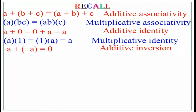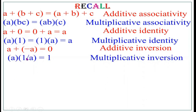What about multiplicative inverse? If you multiply two numbers and the result equals 1 (since 1 is the multiplicative identity), then if A is one number, 1 by A is the other number so that A and 1 by A cancel to give 1. This property is known as multiplicative inversion: A into (1 by A) equals 1, where 1 by A is the inverse of A with respect to multiplication.